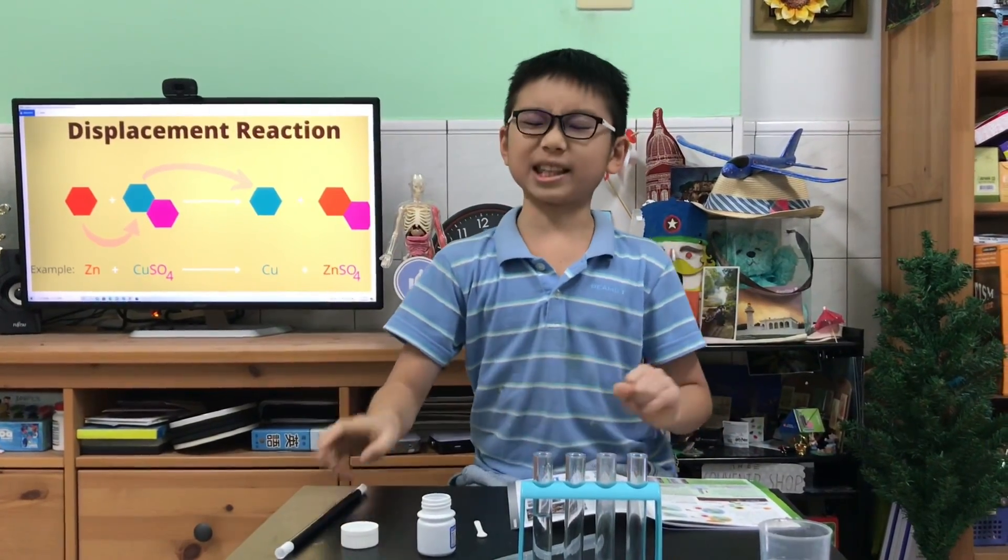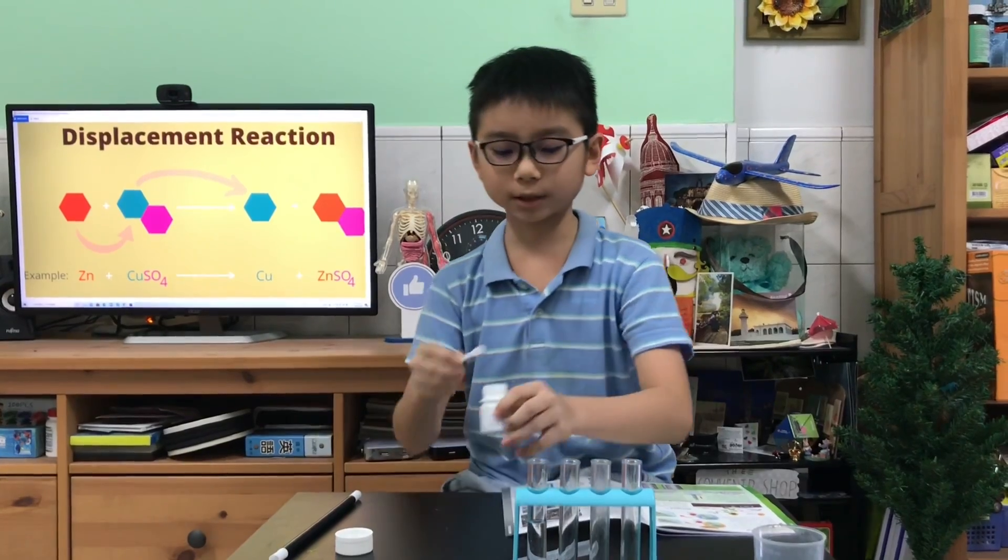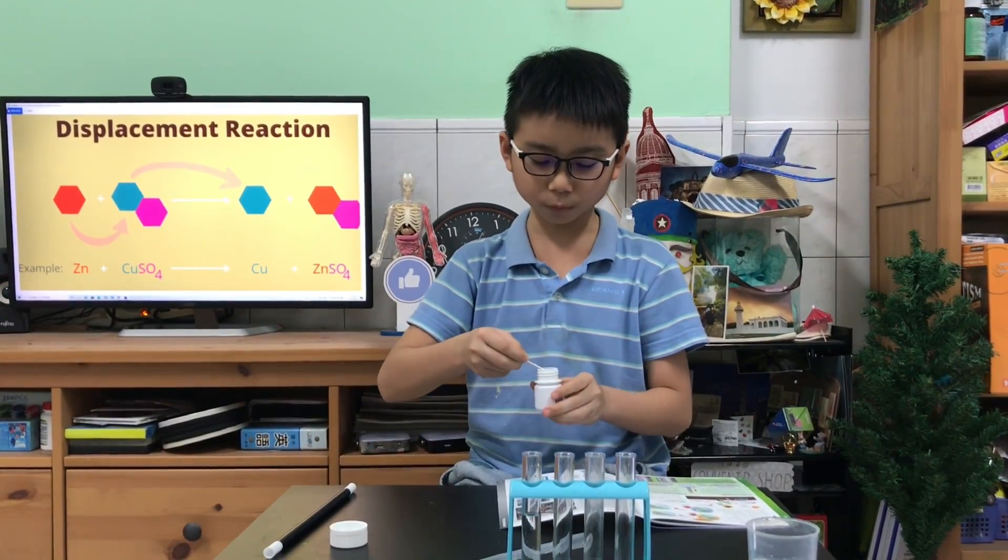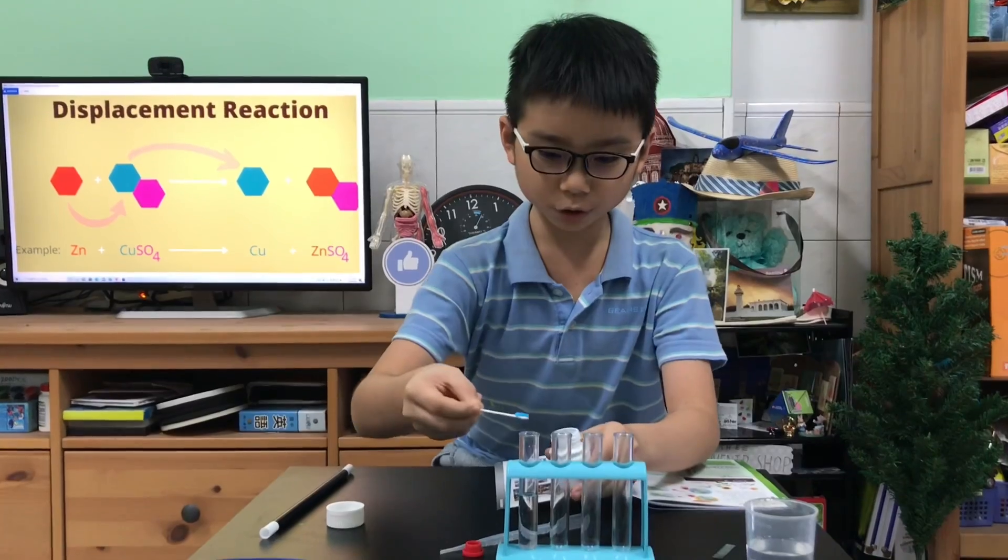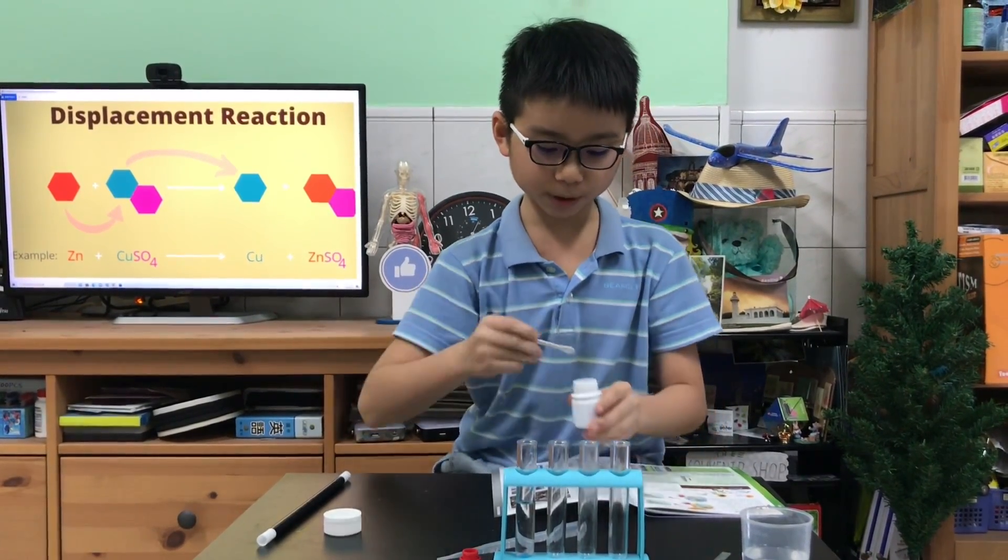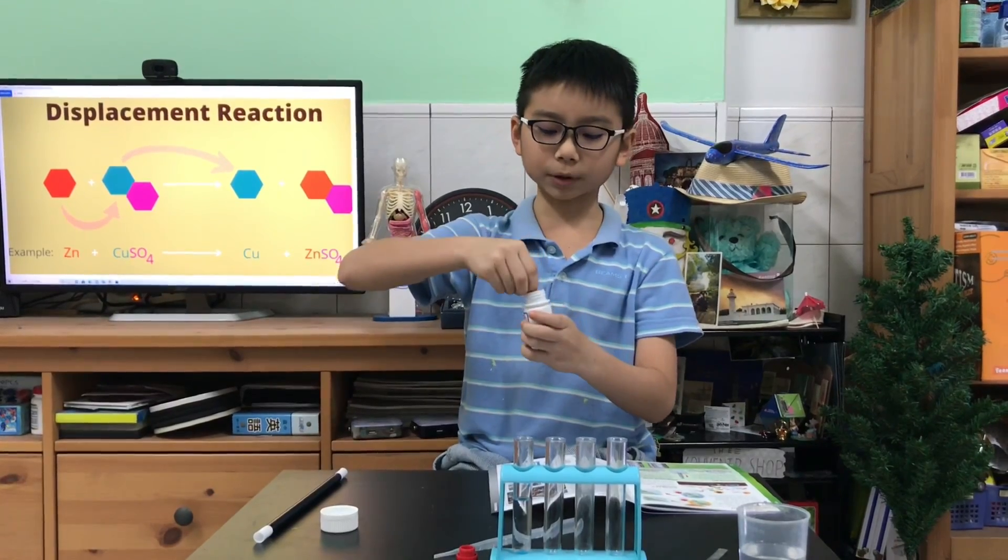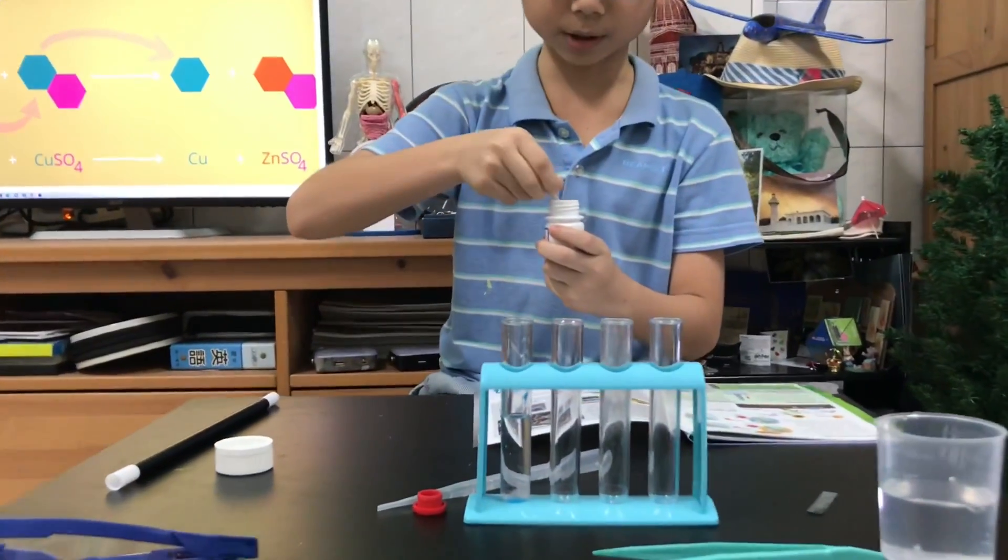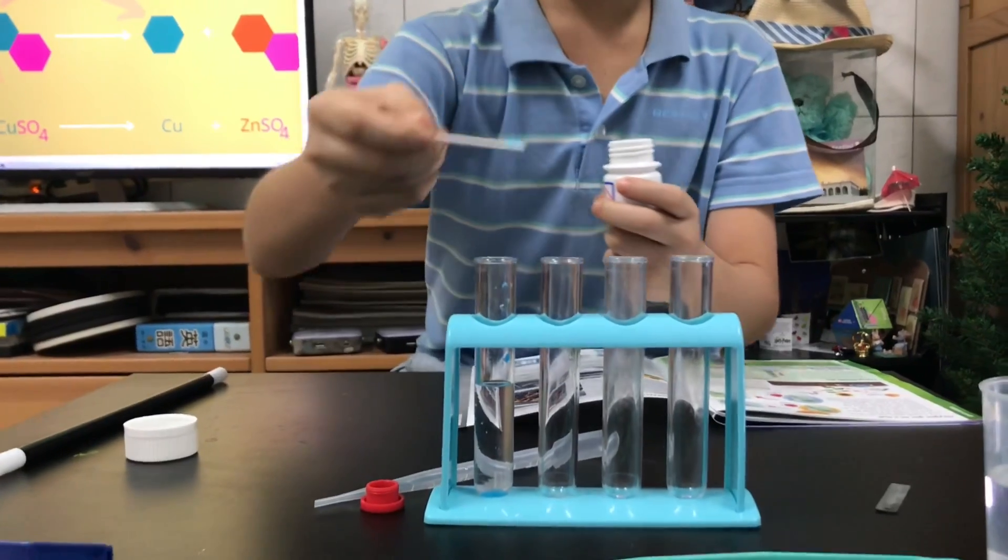So first we need our copper sulfate solution. We're going to add two pipettes of water inside this test tube and two scoops of this copper sulfate. This will become the copper sulfate solution.